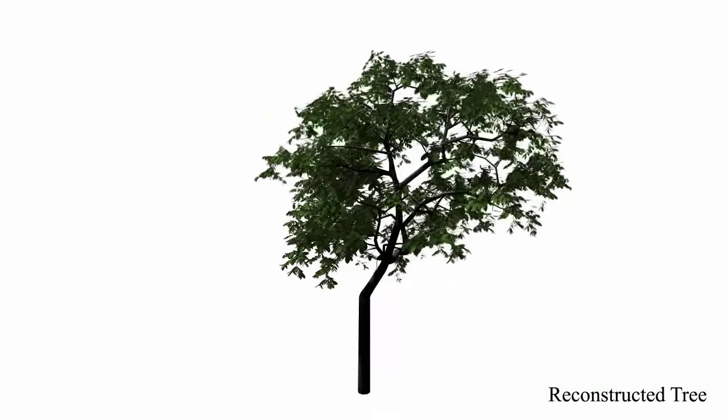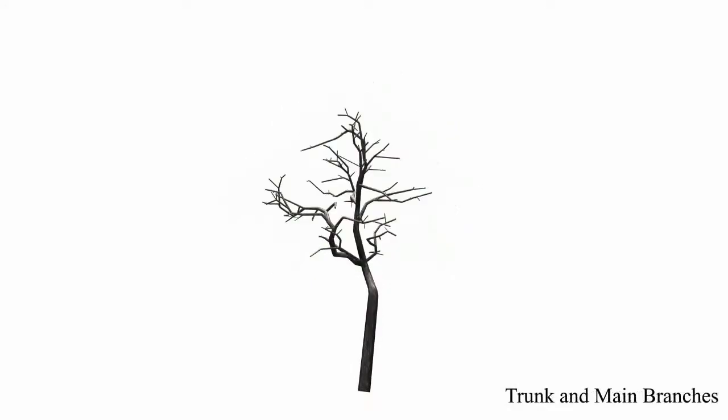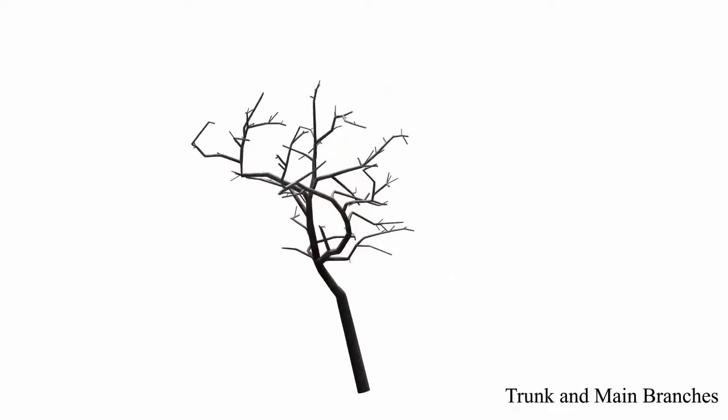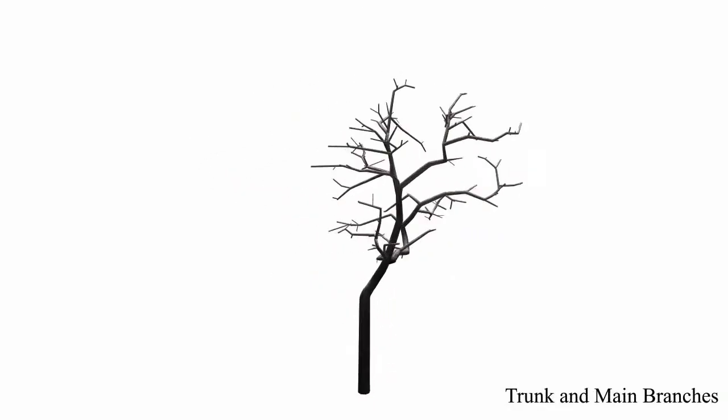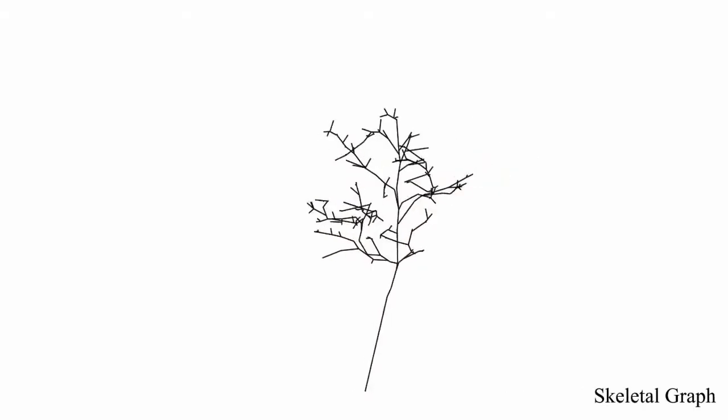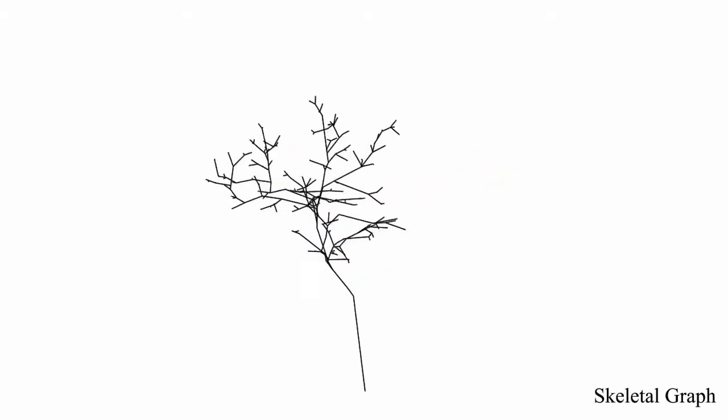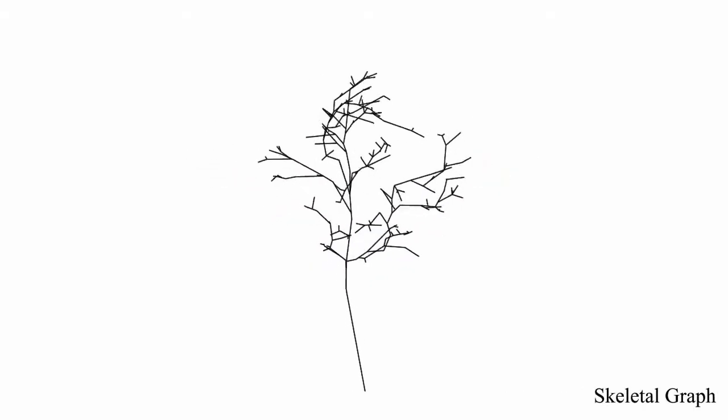The tree representation consists of two main parts. The first part is the skeletal structure, which is visually prominent and has to be represented faithfully. The skeletal structure is represented as a graph, with associated information such as branch diameter and textures.